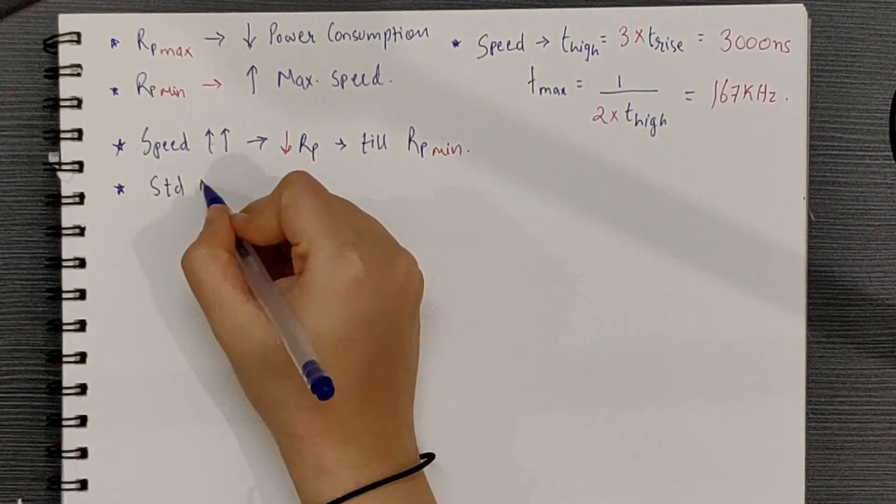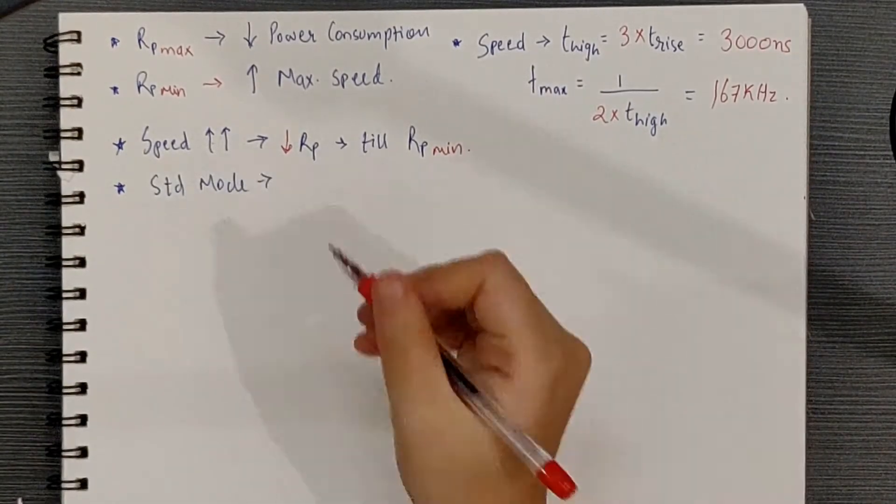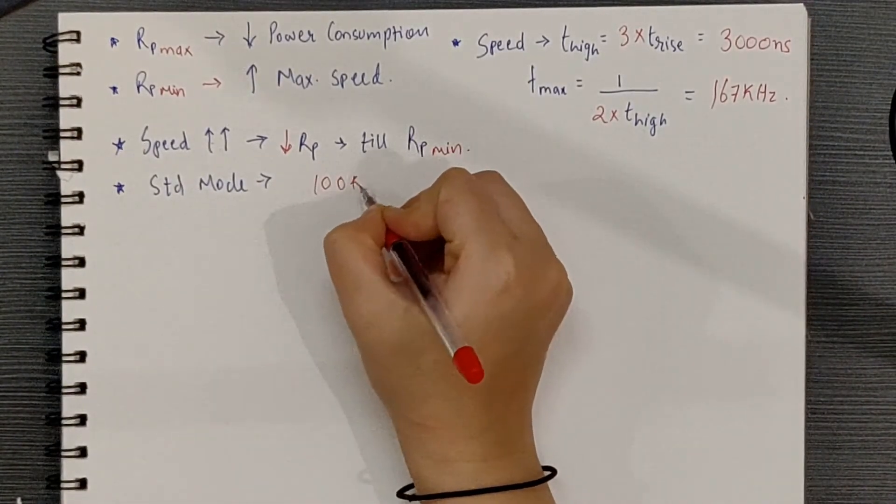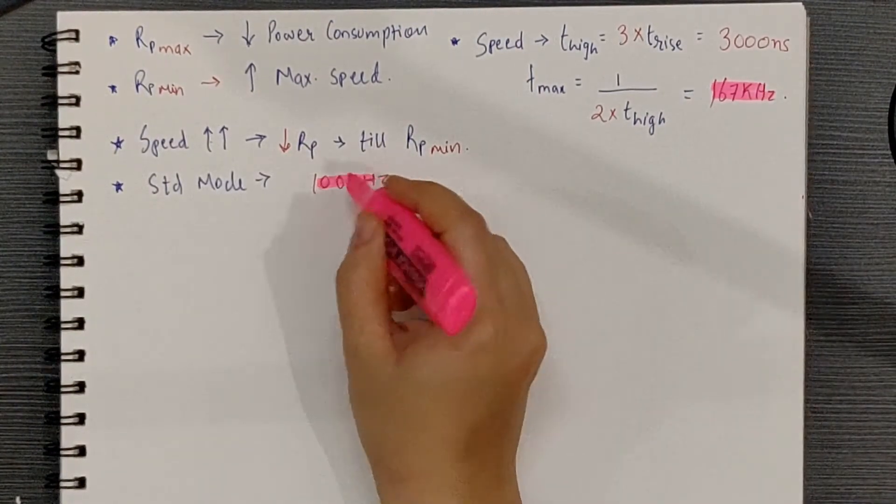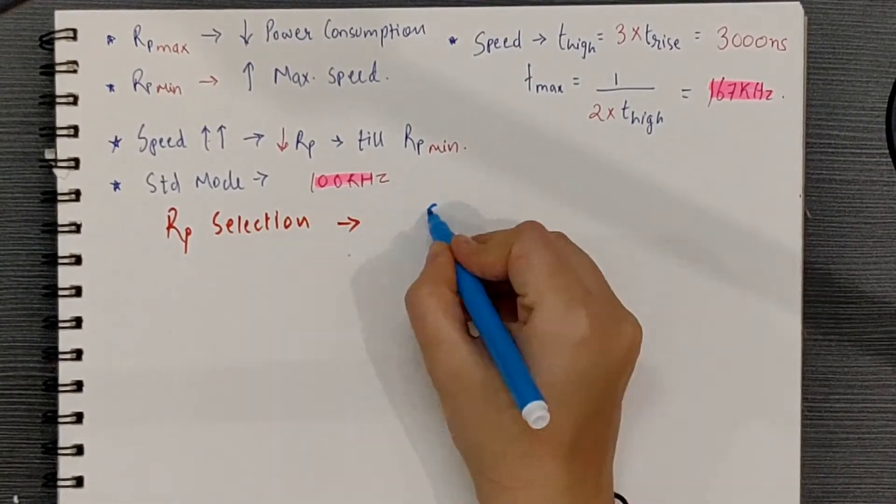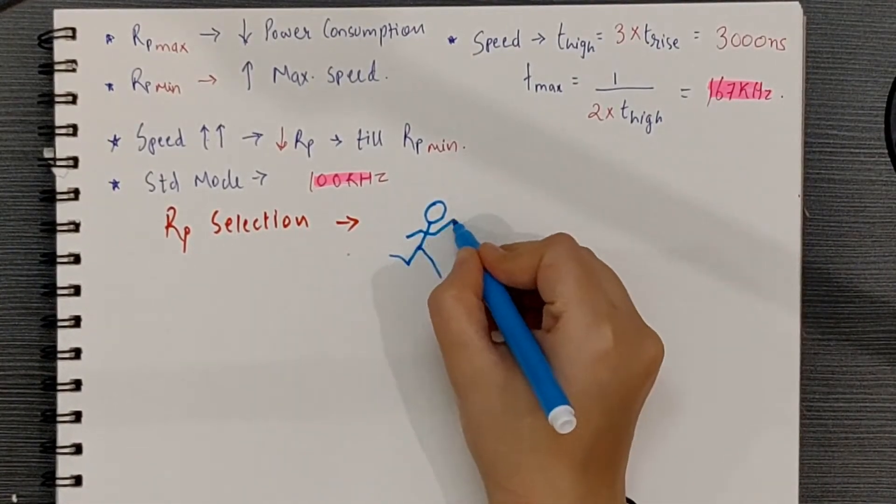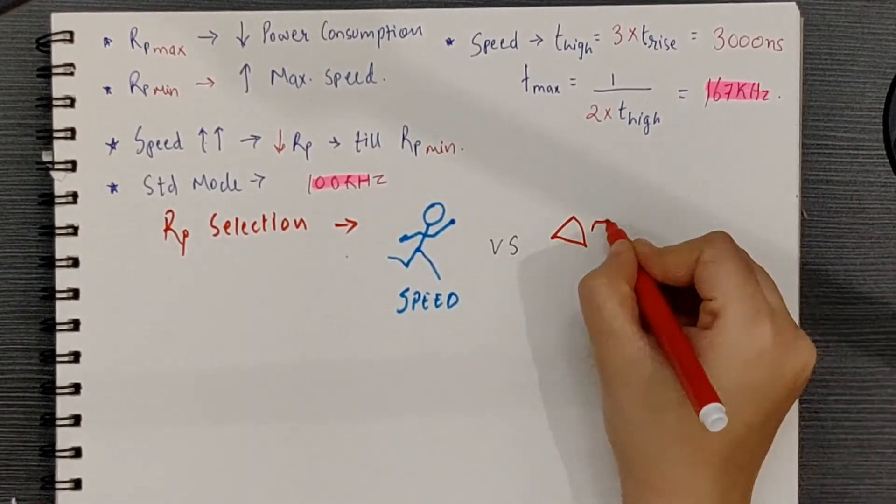standard mode limits the clock speed to 100 kHz, so you should be good with 167 kHz but it can be adjusted according to your system's requirements. Thus, the trade-off for the selection of your pull-up resistor is speed versus power dissipation.